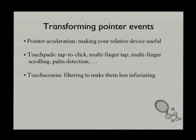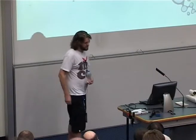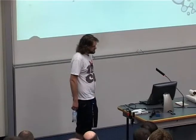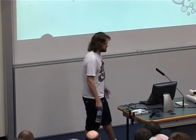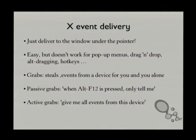For pointer events we do a fair bit more. We accelerate the pointer so it doesn't take you a year to move from the left-hand to the right-hand side of your screen — though we tend to do it quite badly, so it takes you about a second. For touchpads, we do a lot more complex processing: you have to deal with tap-to-click, multi-finger taps and multi-finger scrolling. You have to filter the life out of it because they're useless, you have to do palm detection so you don't accidentally trigger touchpad taps every time you're typing. We don't do it very well, and most touchscreens need some filtering to make them less horrific.